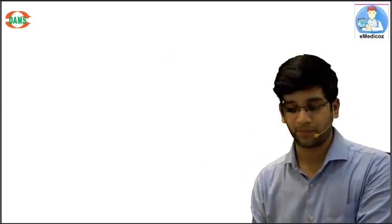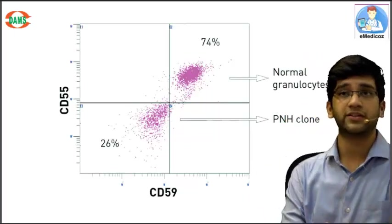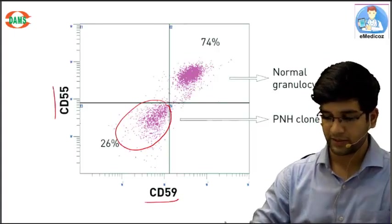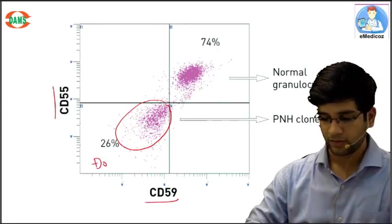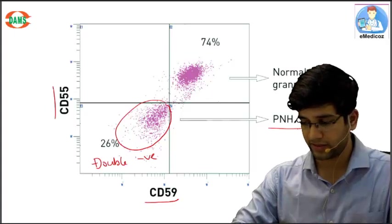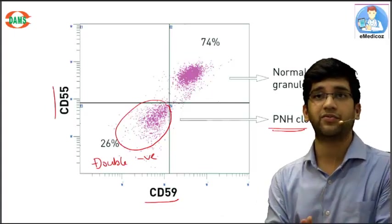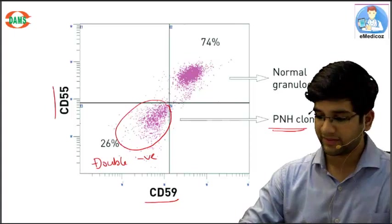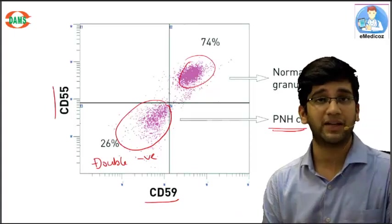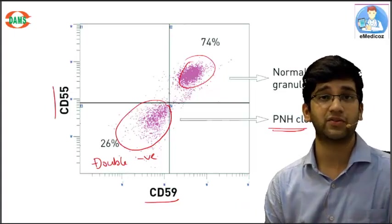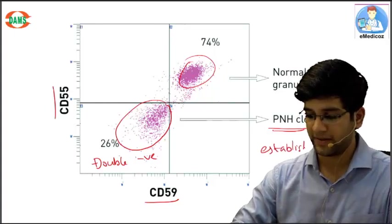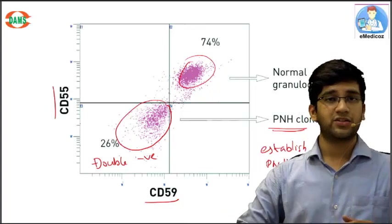The flow cytometry picture looks like this. Here I have CD55, here I have CD59. This clone is double negative, which means this clone is not having both CD55 and 59 - that's a PNH clone. This clone is normal. This patient has 26% of his blood cells with lack of both CD55 and 59, which establishes my diagnosis of PNH.